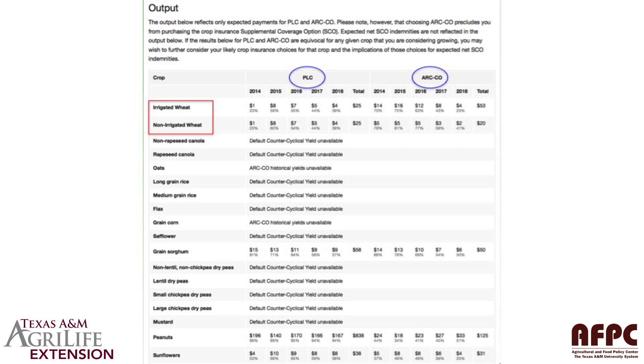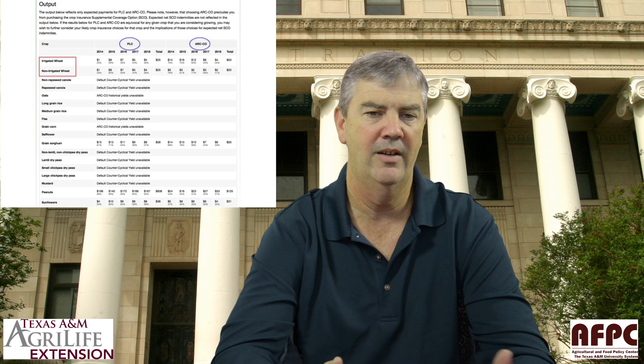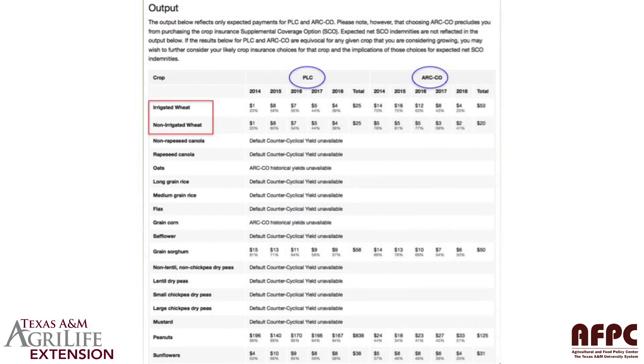Going back to the top — if you're a producer with irrigated circles growing irrigated wheat, and the corners are dryland wheat, you need to look at this carefully. In one respect price loss coverage is better for wheat if it's not broken out by type. However, if you have mostly irrigated wheat, the $53 ARC County estimate is significantly higher than $20, so picking ARC County would make economic sense. If you're significantly more dryland wheat with very little irrigated, averaging a lot more of the $20 with a little of the $53, $53 over the life of the bill might give you a different look at what you should do.